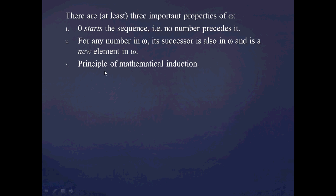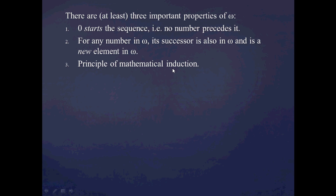Thirdly, we saw that the principle of mathematical induction holds on omega. So another three important properties I'd like to point out: firstly, we had some set of objects we're considering — in this case, omega. The second is that we had some starting element, some zero element. And thirdly, we had some notion of a successor function. And those three abstract properties are what we're going to really discuss when we're talking about Peano systems.